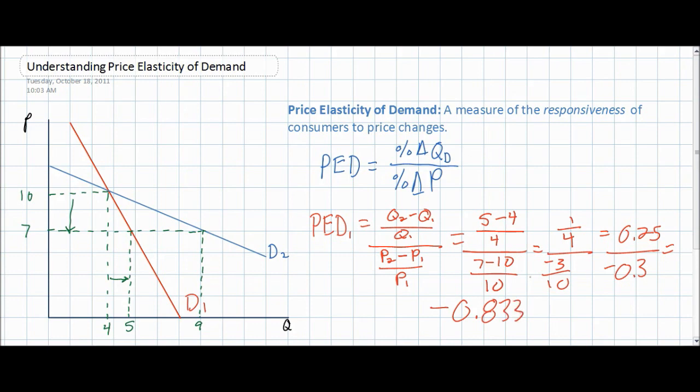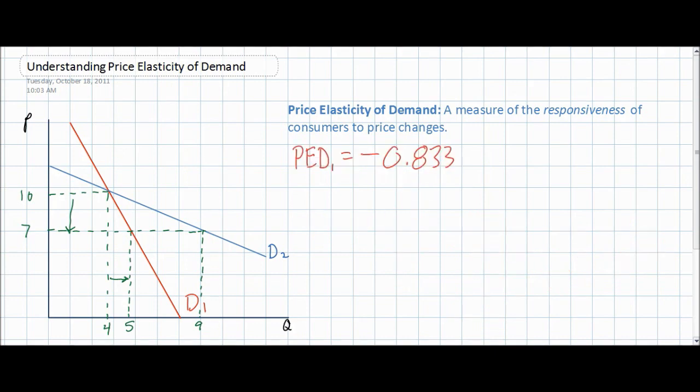0.25 divided by negative 0.3 equals negative 0.833. The price elasticity of demand for the good represented by D1 is negative 0.833. What this number tells us is the responsiveness of consumers of good D1 to a change in price. For every 1% decrease in the price of good one, the quantity demanded will increase by 0.833%. For every 1% increase in the price, the quantity demanded will decrease by 0.833%.